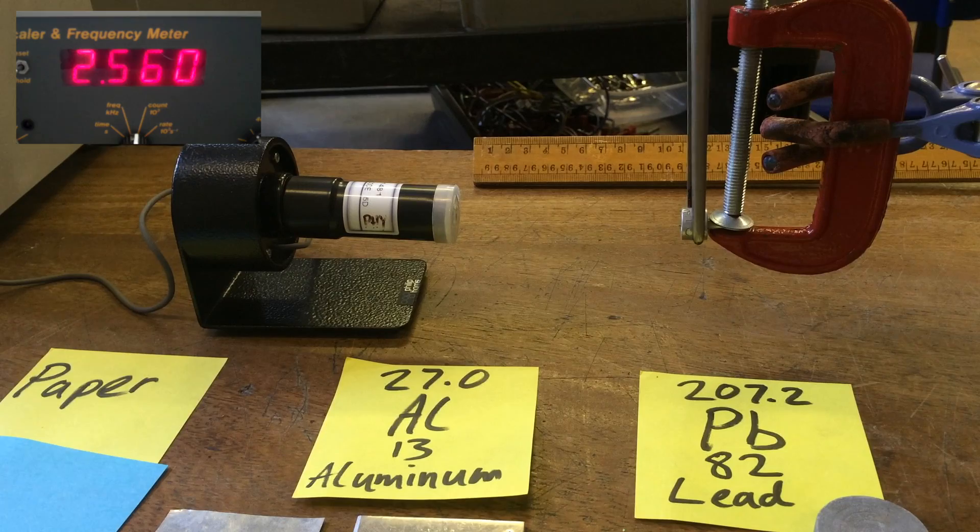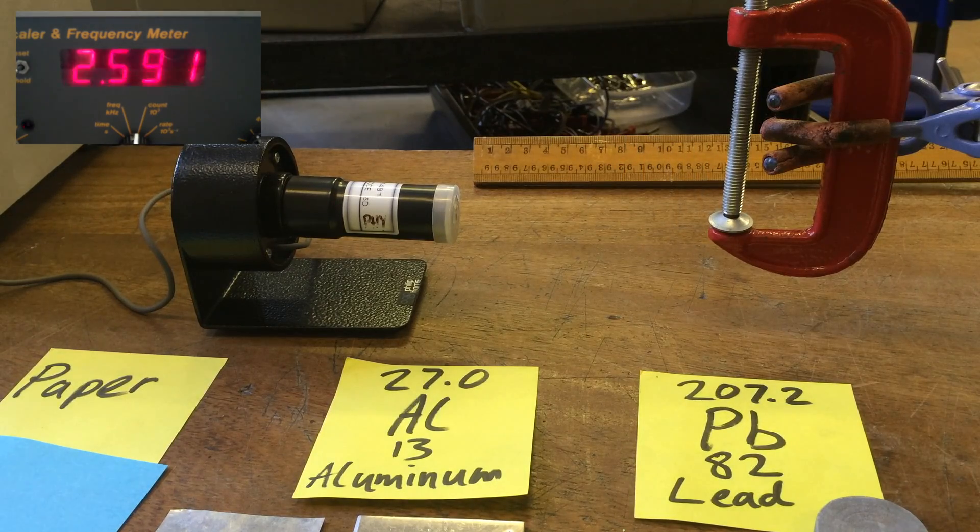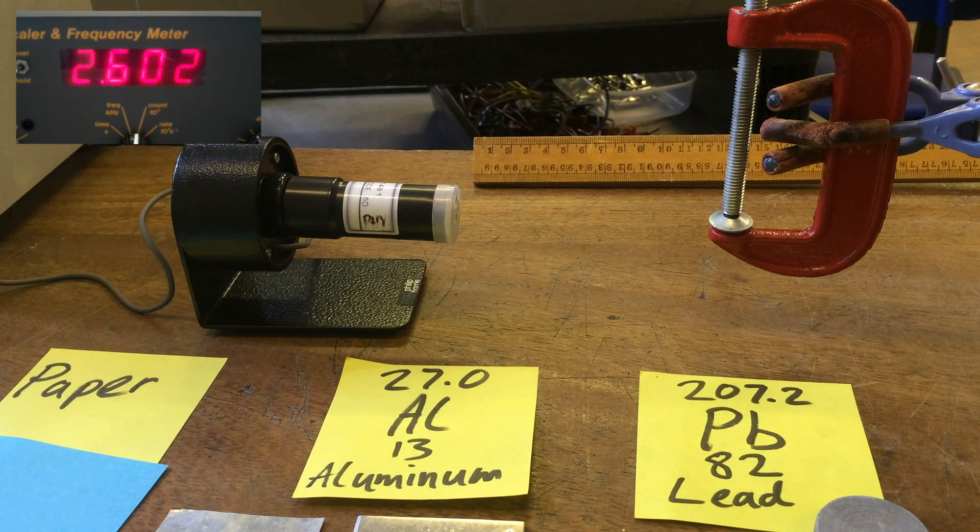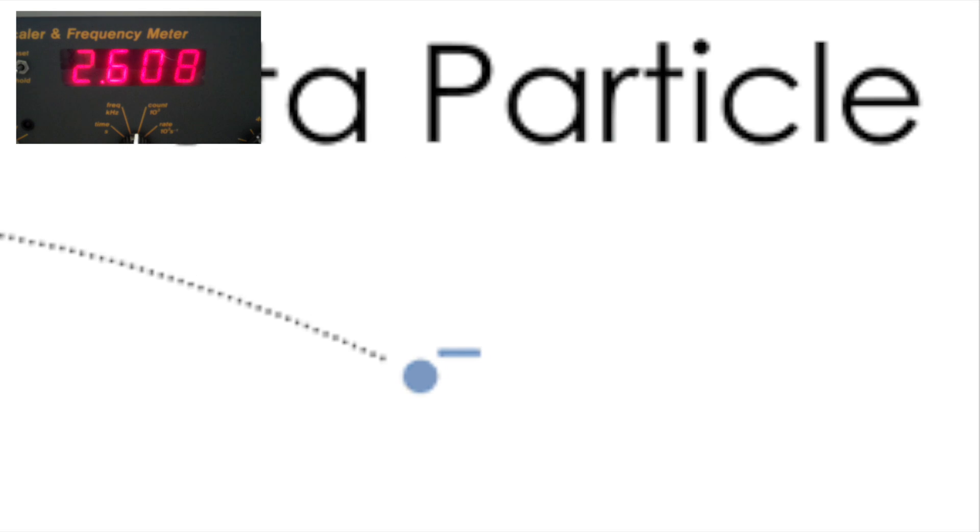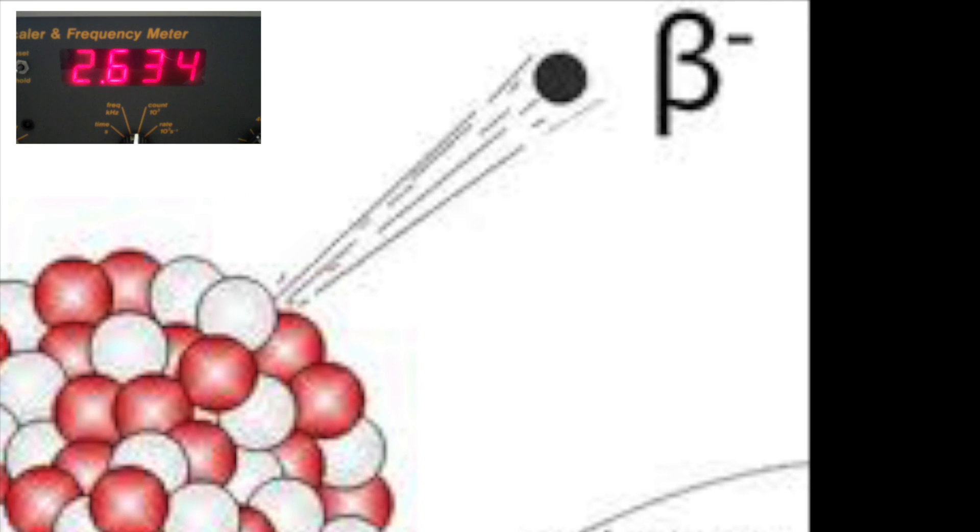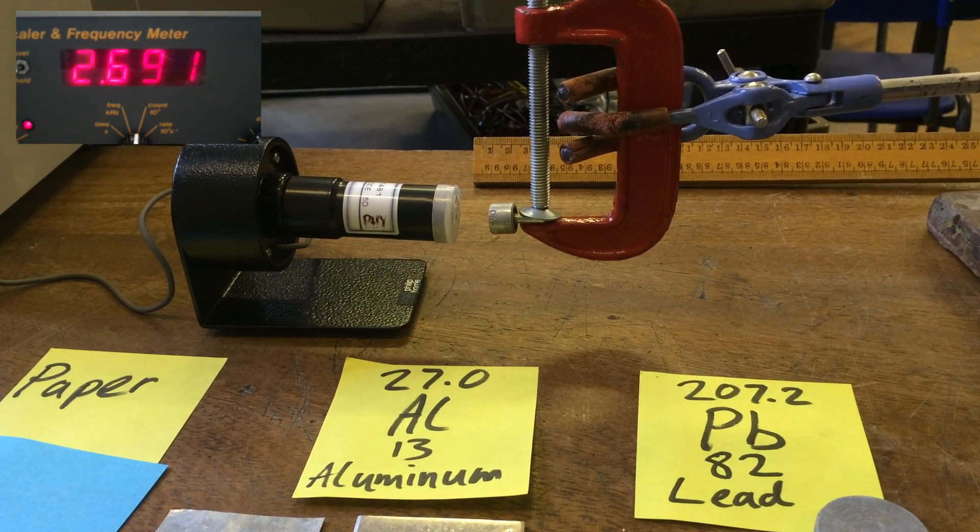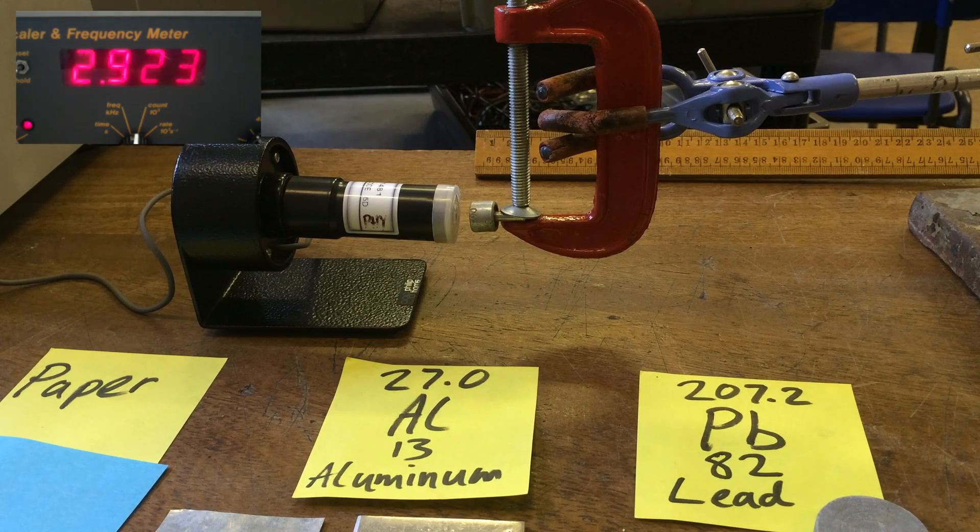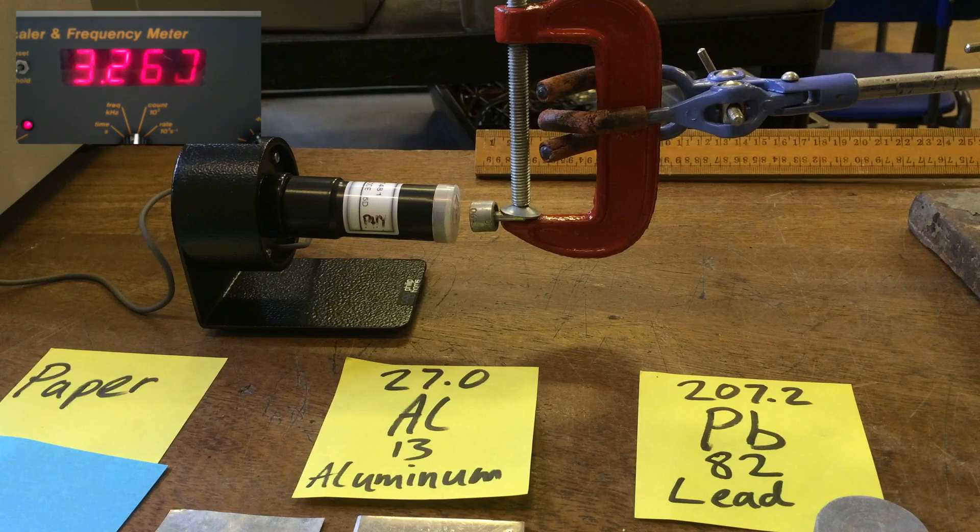Next one is called beta particles. A beta particle consists of a high-energy electron, and this high-energy electron is emitted from the nucleus of the atom. We clamp that down and move it closer. When it's really close, it's detecting loads and loads of beta particles. As we move it away, we have to go a good maybe 10 centimeters away before it starts dropping away appreciably.